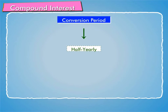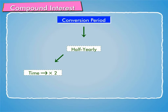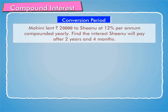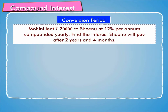But, if the conversion period is half yearly, the given time in years will be multiplied by two and the rate of interest per annum will be divided by two. Let us take an example.